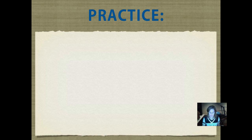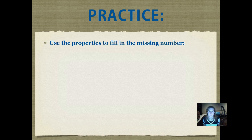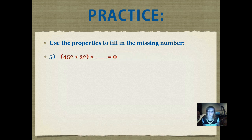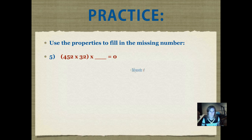Now we're going to do some practice with these — use the properties to fill in the missing number. Number five: what number would go in that blank space to make that true? In your journal, write out the full number sentence, not just the number that goes in the blank space, and fill in the blank with the correct number. Pause it and play when you're ready. Did you write 0? This was the zero property. Even though 452 times 32 has a pretty big product, if you multiply it by 0, you're going to get 0.